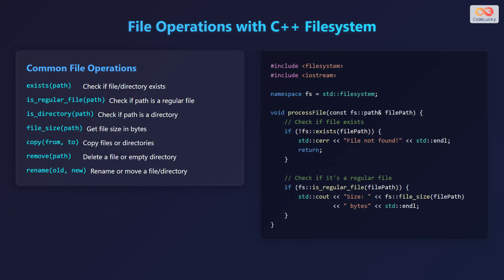Let's explore file operations with the C++ filesystem library. The function exists() takes a path as input and checks if a file or directory exists. The function is_regular_file() takes a path and checks if the specified path is a regular file. The function is_directory() checks if a path is a directory. The function file_size() takes a path and returns the file size in bytes. The function copy() takes two paths — from and to — and copies files or directories from the source to the destination.